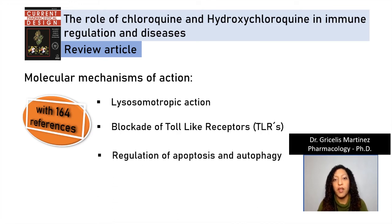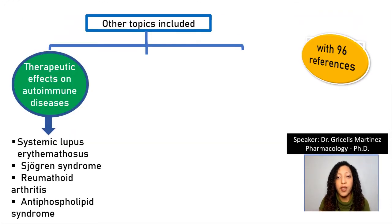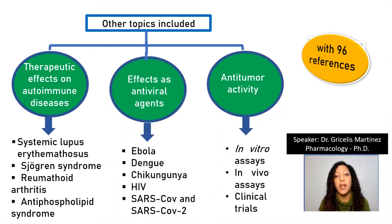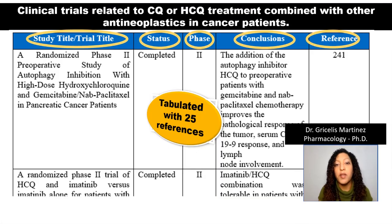These drugs have been used as monotherapy or combined with other drugs. They have been used for the treatment of immunological diseases, but also as antiviral and antitumor agents. We also included a table of clinical trials for the treatment of cancer.